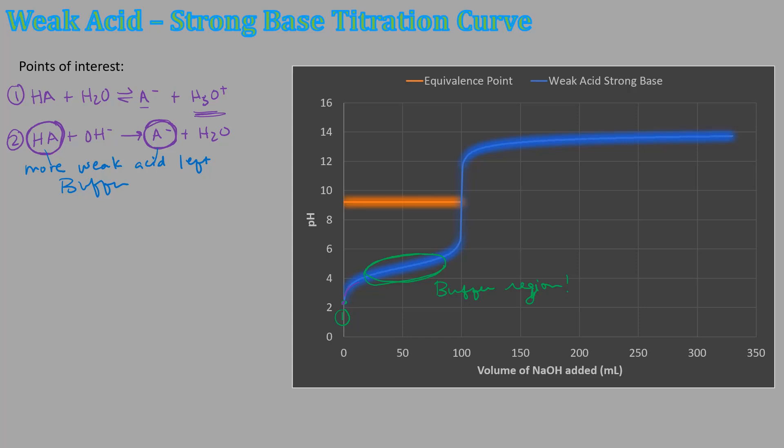And then the next point I want to talk about is the half equivalence point. So the equivalence point here is occurring at a hundred milliliters. This buffer region is two. But the point that I want to talk about is the halfway equivalence point. So that would be at 50 milliliters. So it's this particular point right here in yellow. So that point is the pKa. You may or may not know that.